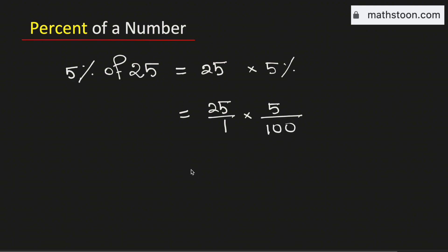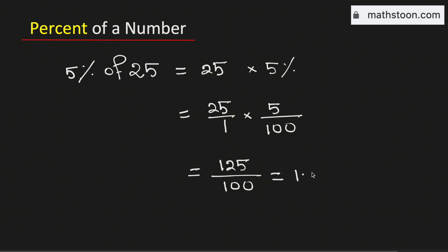Now if we multiply the numerators we will get 125, and in the denominator we have 1 times 100, which is 100, and this is same as 1.25. Therefore, 5 percent of 25 is equal to 1.25, and this is our final answer.